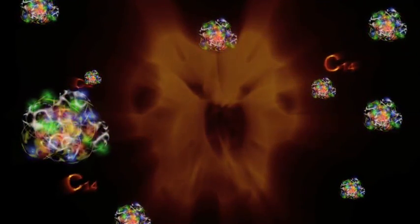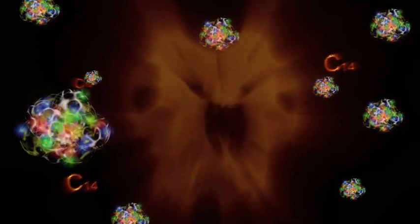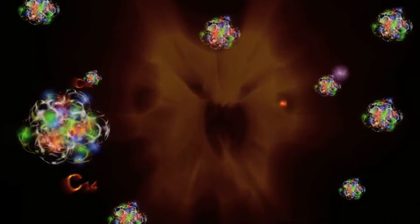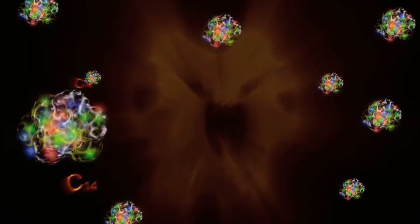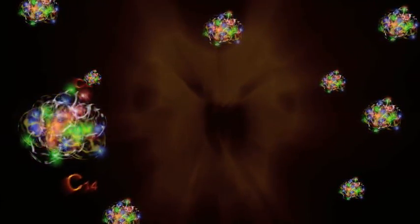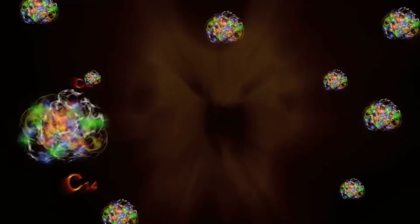After 5,000 years, about half of the original number of carbon-14 atoms will have decayed. Using this fact, scientists can tell how long ago an organism died.